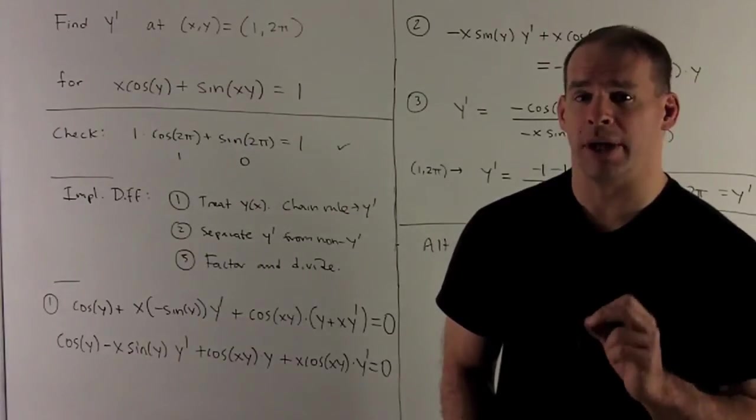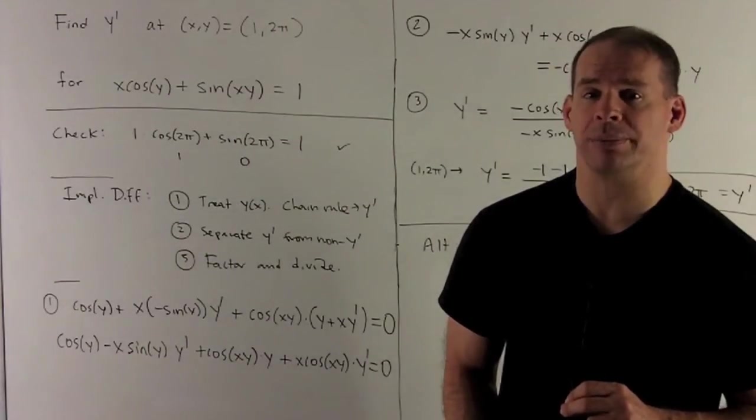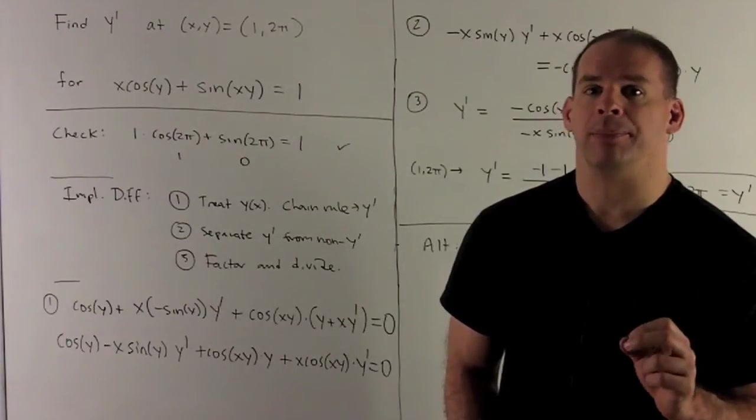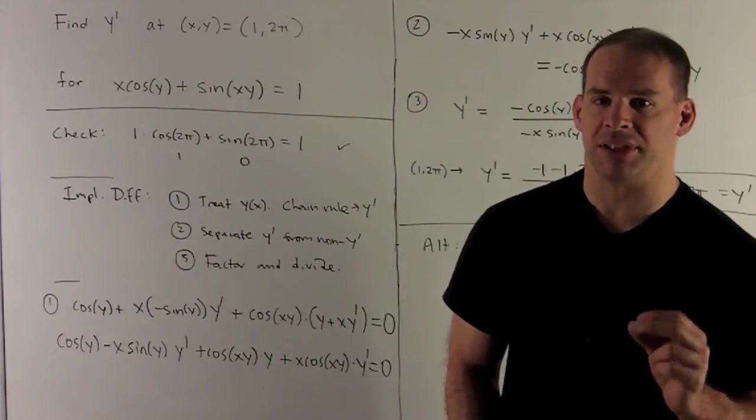That definitely holds because this point definitely satisfies the equation. So now, I want to find y prime. How are we going to do that? This is the business of implicit differentiation.